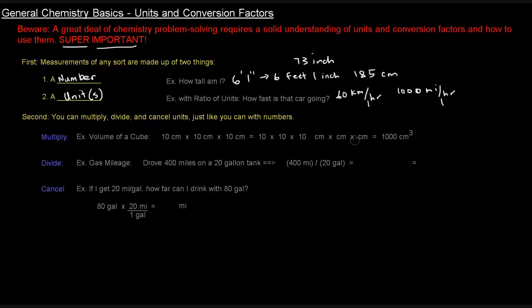The 10s multiplied through gives us 1000, and the centimeters multiplied by each other is centimeters cubed. That's why the volume is expressed in cubic centimeters in this case.